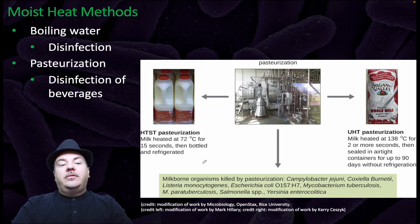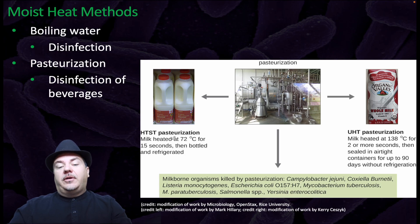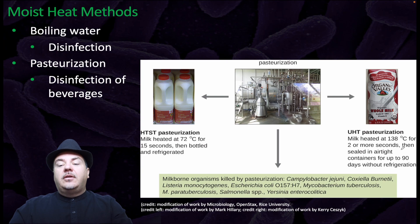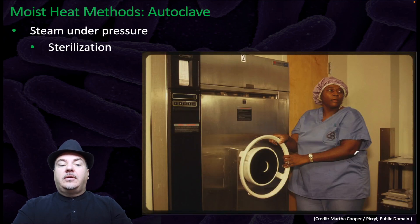For moist heat methods, we can have boiling water, which allows disinfection. We can also have pasteurization, which is disinfection of beverages. With pasteurization, there are a couple of different methods. The common method for milk is heating at 72 degrees Celsius for 15 seconds, then bottling and refrigerating. There's also ultra high temperature pasteurization, where milk is heated to 138 degrees Celsius for two or more seconds, sealed in an airtight container, and can be stored on the shelf for up to 90 days without refrigeration. We also have autoclaves, which use steam under pressure to allow sterilization.